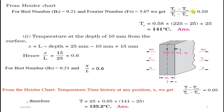With the y-axis value of 0.58, we can find the central line temperature Tc (also written as T₀): Tc = 0.58 × (Ti − T∞) + T∞ = 0.58 × (225 − 25) + 25 = 141°C.